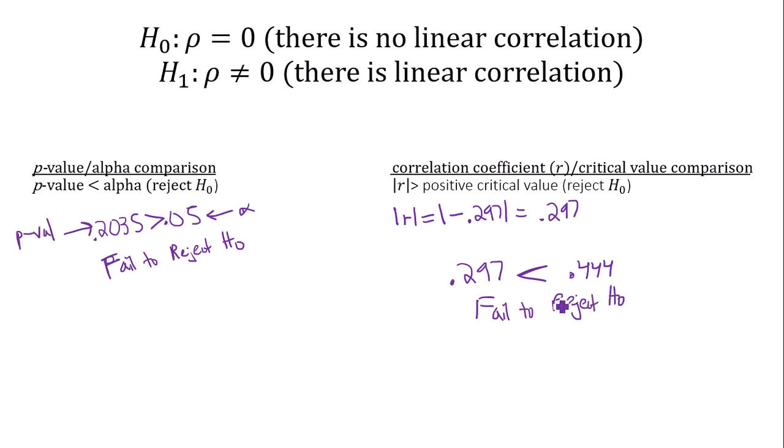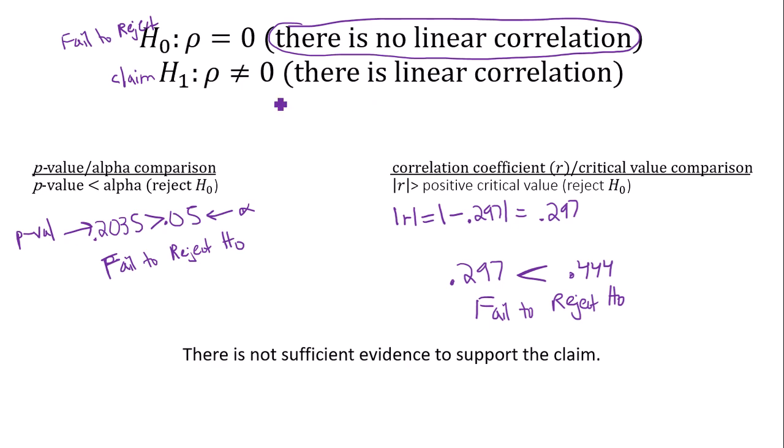Regardless, you get the same result no matter what method you use. So fail to reject H0. That means all eyes are pointing to the fact that there is no linear correlation in this case. Our claim was that there was linear correlation, which means that there is not sufficient evidence to support the claim in this case.